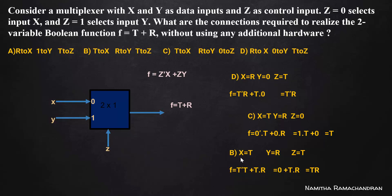Going to option B: here x is t, y is r, and z is t. Applying this input to the expression, f equals t-complement times t plus t times r. Since t-complement times t equals 0, we get f equal to tr. This is again not equal to our expected output f equal to t plus r.